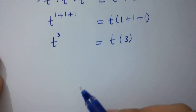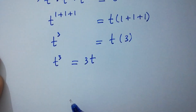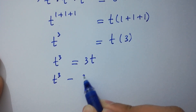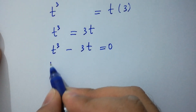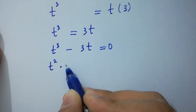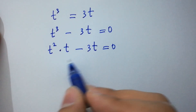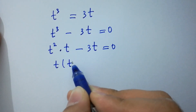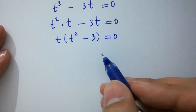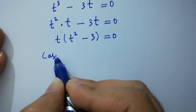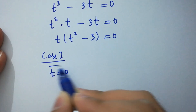So we have t to the power 3 equal to 3t, which can be written as t cubed minus 3t equal to 0. We now have two cases: case 1, t equal to 0, and case 2, t squared minus 3 equal to 0.